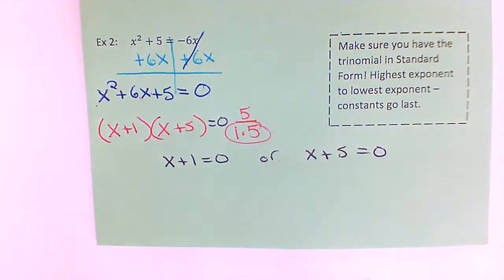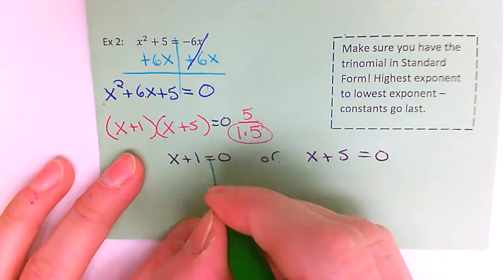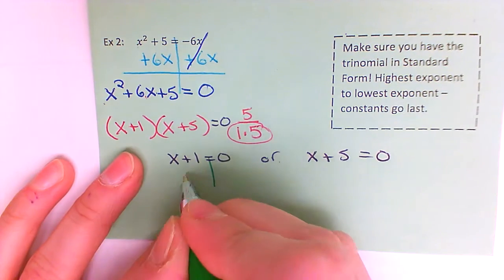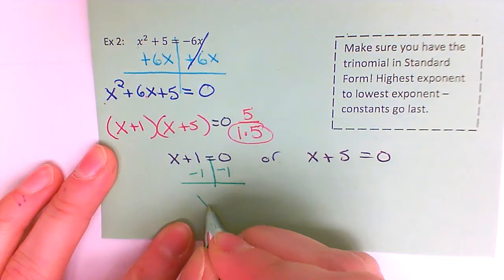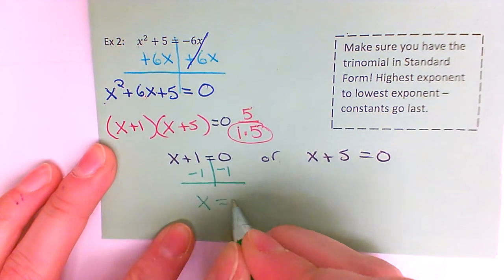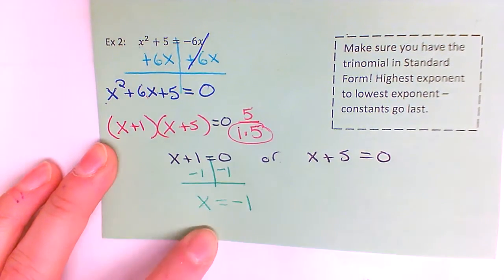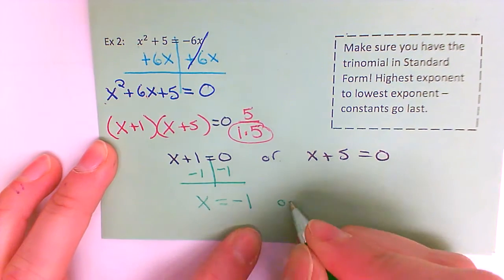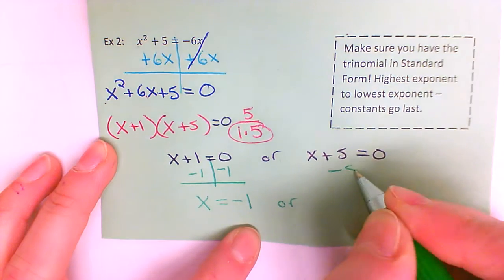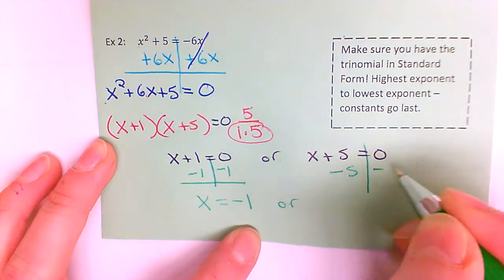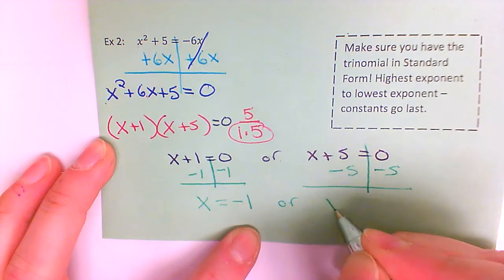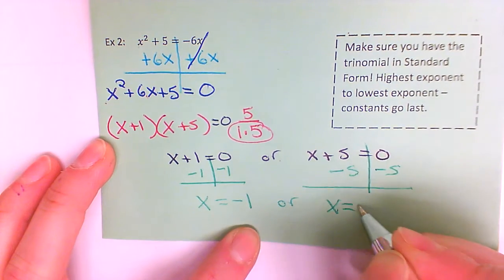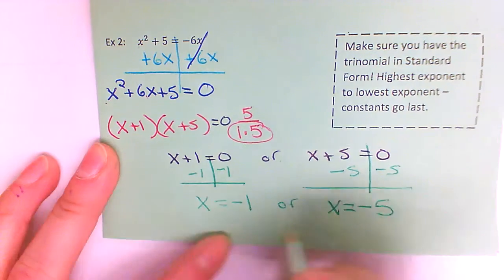Now it is just a one-step equation. I would subtract the one from each side and get x is equal to negative one. On the other side, I subtract the five from each side of the equal sign, and I've got x is equal to negative five.